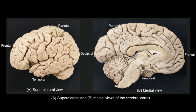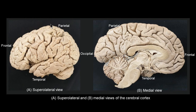The central sulcus indents the superior medial border of the hemisphere about one centimeter behind the midpoint, and then runs downwards and forwards across the lateral aspects of the cerebral hemisphere. Its lower end is separated from the lateral sulcus by a little bridge of gray matter — a gyrus — which means the central sulcus does not touch the lateral sulcus.